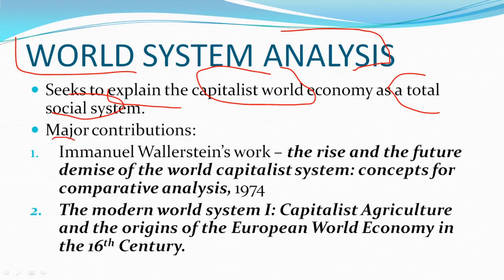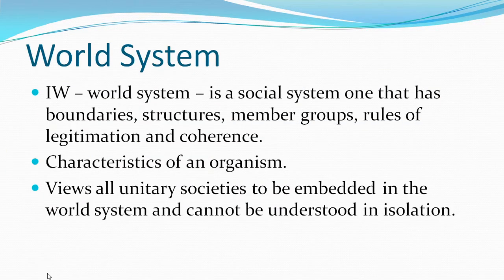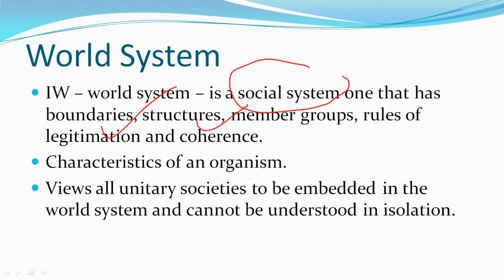Emmanuel Wallerstein seeks to explain the capitalist world system as a total social system. Two of his major contributions are: 'The Rise and Future Demise of the World Capitalist System: Concepts for Comparative Analysis' (1974), and 'The Modern World System I: Capitalist Agriculture and the Origins of the European World Economy in the Sixteenth Century.' Wallerstein describes the world system as a social system that has boundaries, structures, member groups, rules of legitimation, and coherence — almost like an organism.